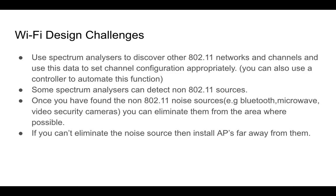To detect these interference sources, you can use spectrum analyzers, which allow you to discover other 802.11 networks and what channels they're using, enabling you to set your channel configuration appropriately. In an enterprise environment, a wireless controller can automate this function. Some spectrum analyzers can also detect non-802.11 sources like Bluetooth, microwave ovens, and video security cameras. Once you detect these non-802.11 noise sources, you can eliminate them from the area if possible, or move your access points away from those sources.